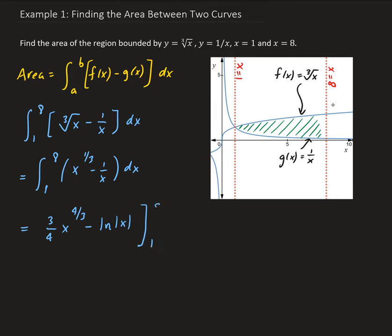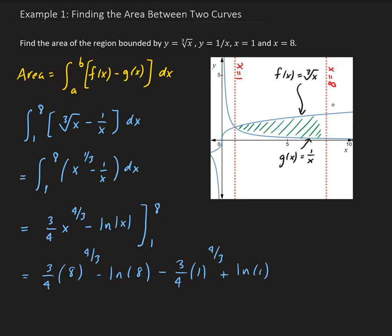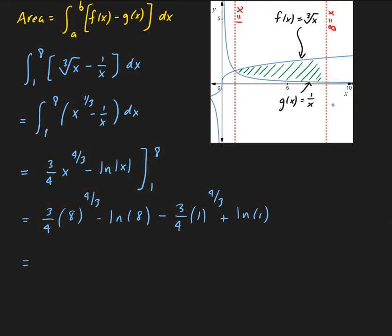We're going to evaluate this from 1 to 8. So we have 3/4 times 8 to the 4/3 minus natural log of 8, minus 3/4 times 1 to the 4/3, plus natural log of 1. Now, 8 to the 4/3 is the same as taking 8 to the 1/3 power — that is, the cube root of 8 — which gives us 2, and then 2 to the 4th power gives us 16.